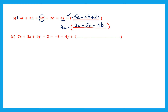Question 6. 7x plus 2z plus 4y minus 3. Here minus 3 and plus 4y have been taken to the right hand side. I just need to insert 7x and 2z. The sign before the bracket is plus, so I can write 7x and plus 2z as they are — 7x plus 2z. The answer remains the same.